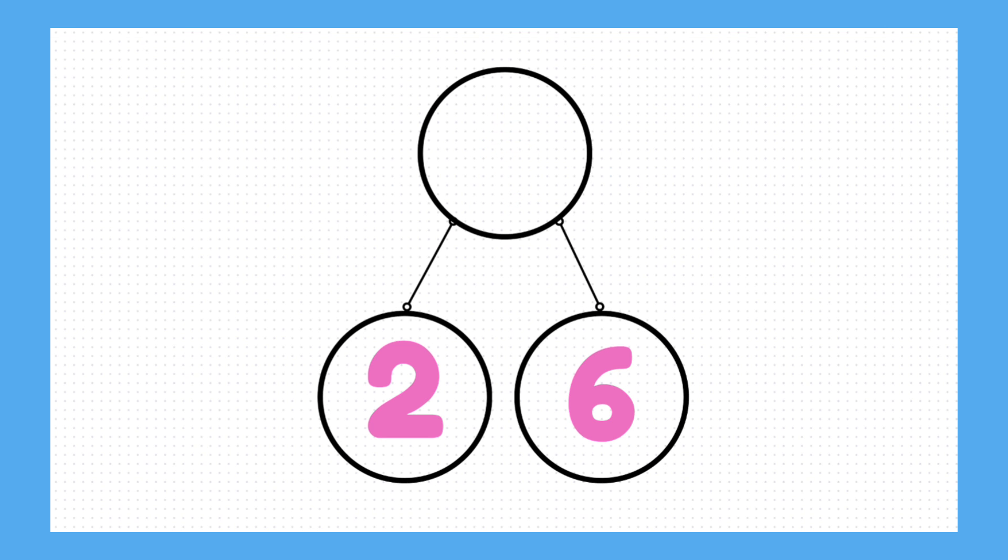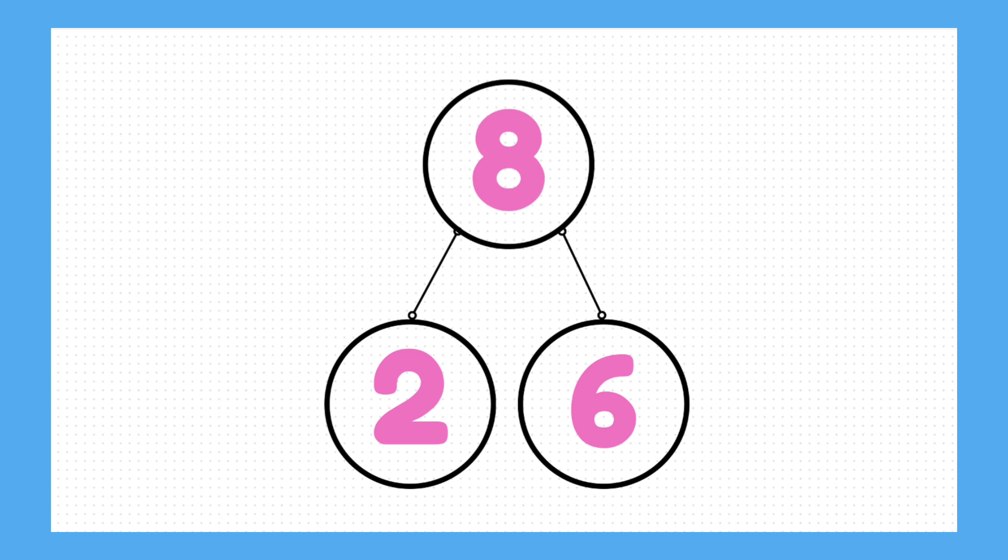Let's try another one. In a part-whole model, if you have 2 and 6 as parts, what number is the whole? The answer is 8. Did you get that one right also?